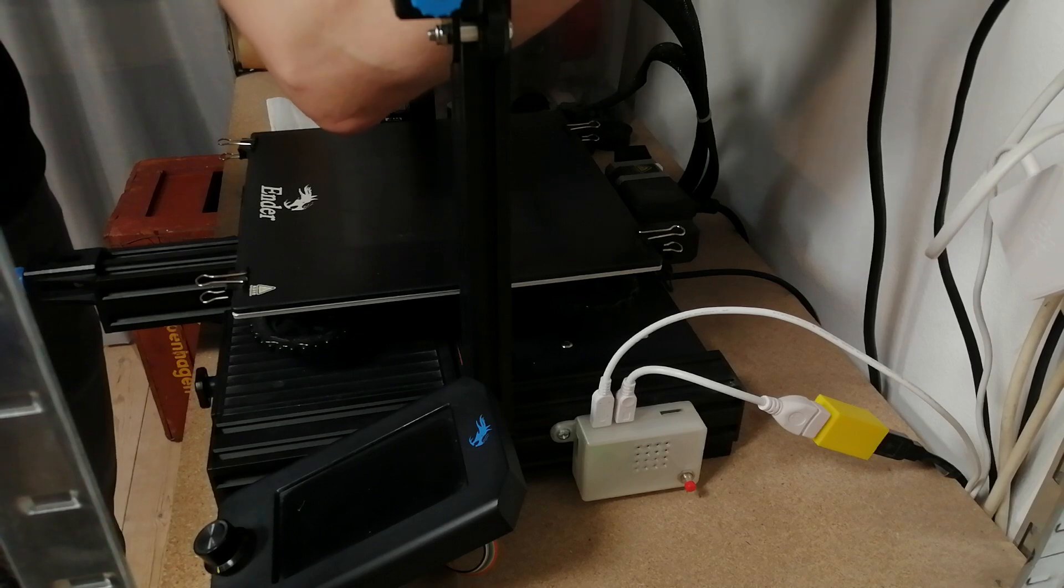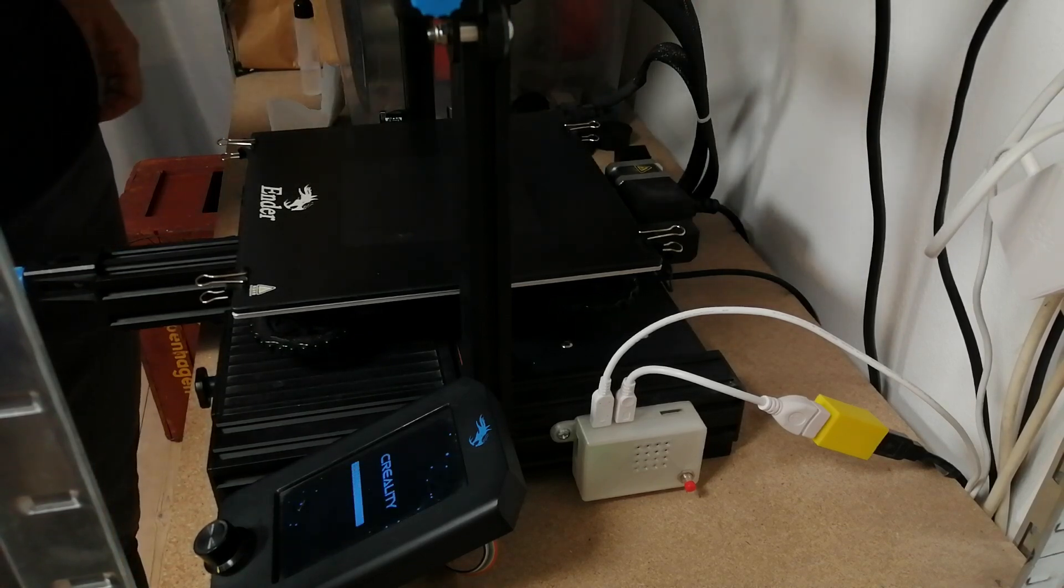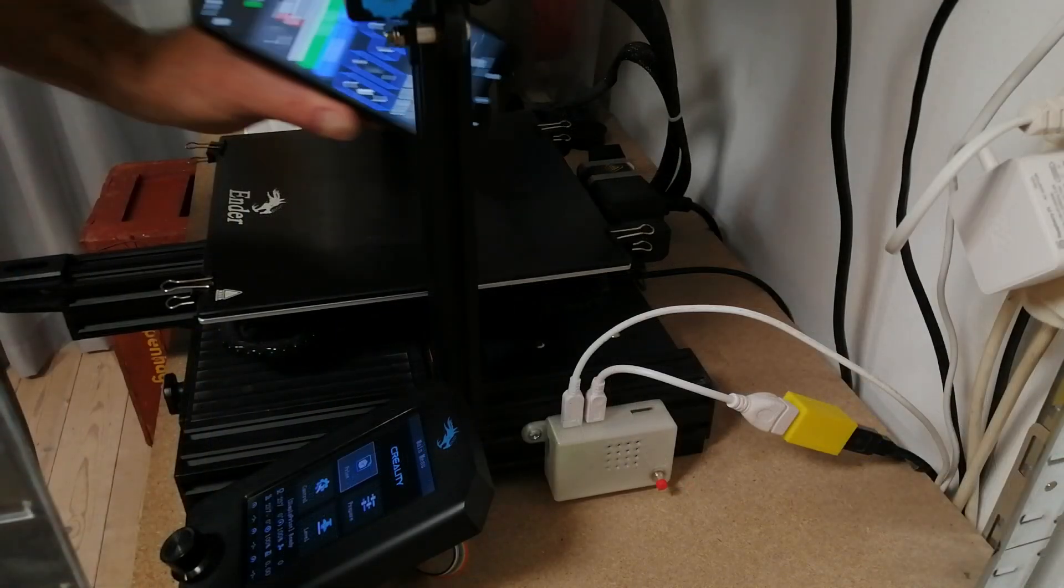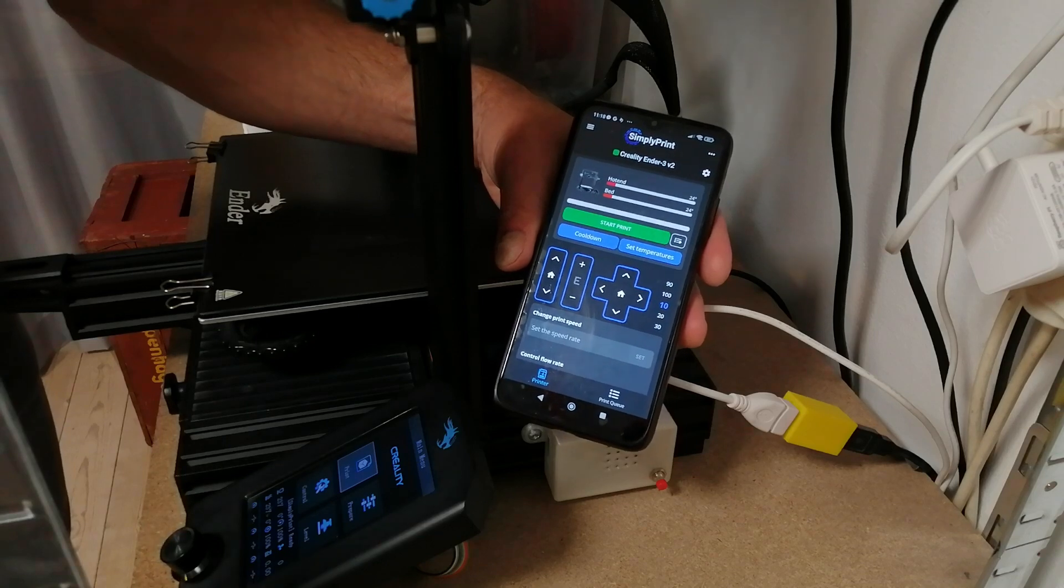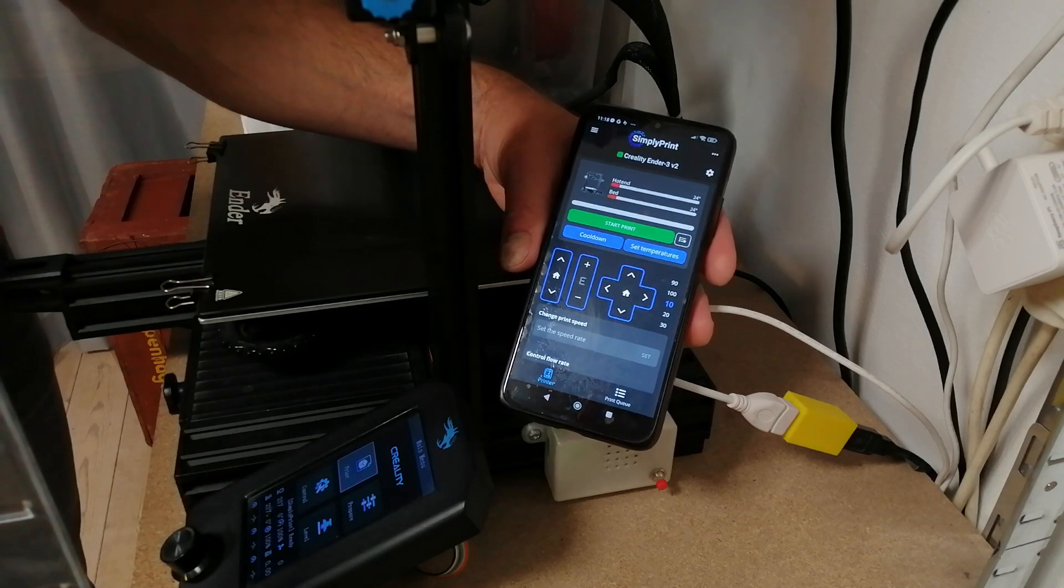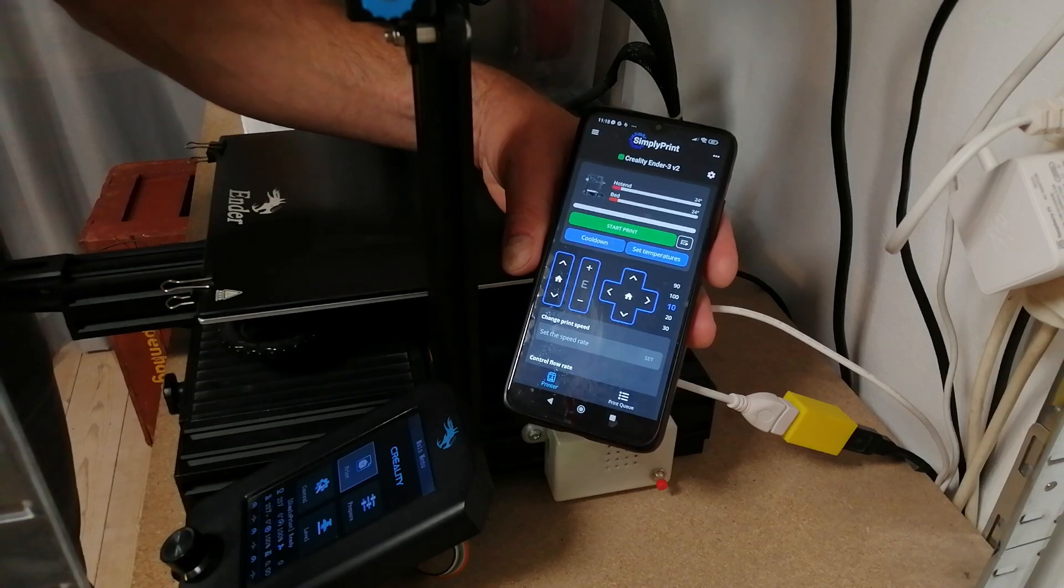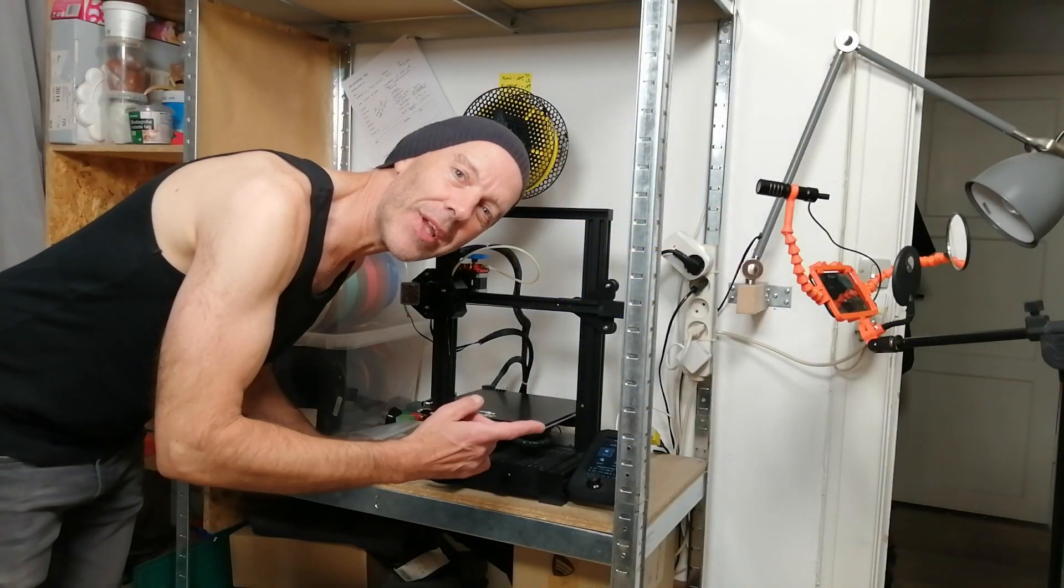All I have to find out now is if it connects to Octoprint and to Simply Print like it's supposed to. And there we go. Printer is ready. This is my Simply Print app, of course. And the printer is ready. I could start a print right now if I wanted to. So, yeah. It's working.